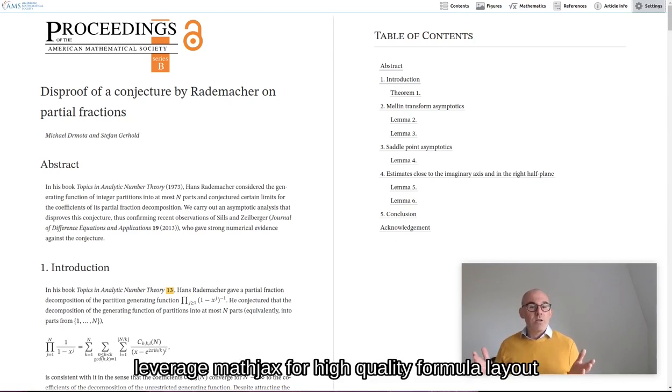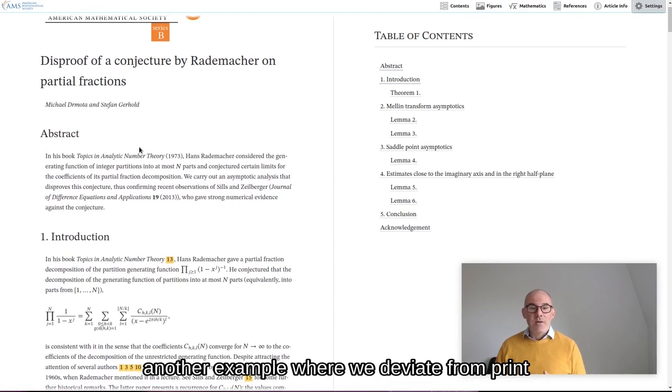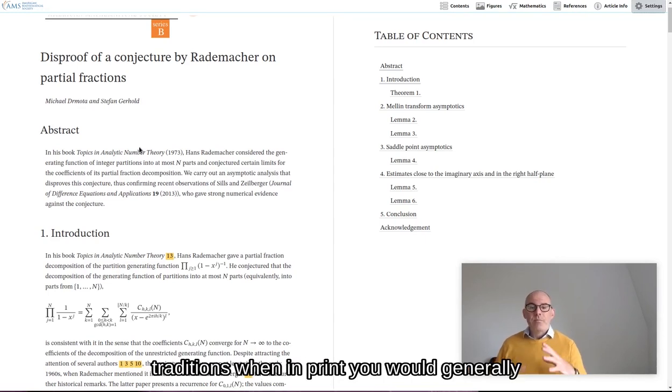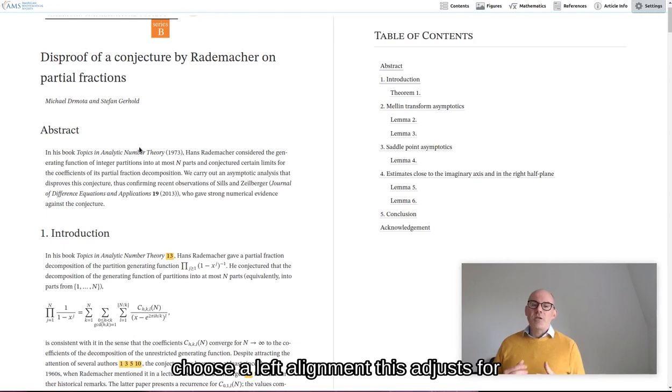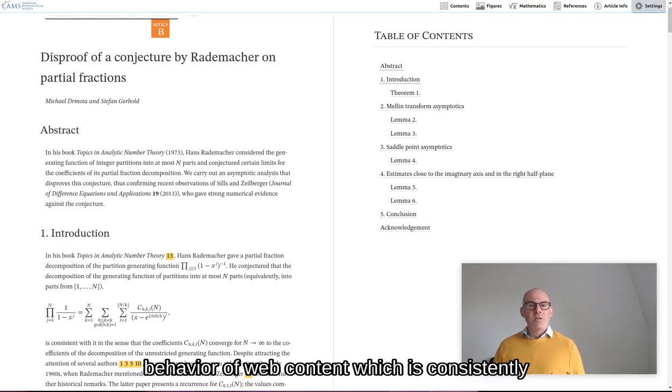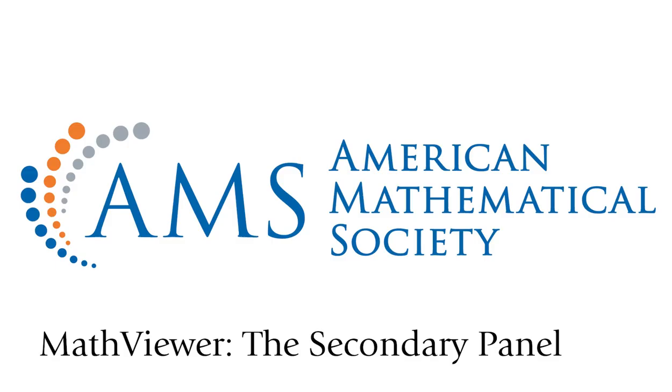Last, but very much not least, we leverage MathJax for high-quality formula layout on the web. MathJax continues to be the gold standard for this, and again, it is a project that the AMS has been a leading partner of ever since its inception. We'll get into more detail on formula layout later, but here we can identify another example where we deviate from print traditions. When in print, you would generally center display equations, on the web we choose a left alignment. This adjusts for the reading behavior of web content, which is consistently different from print. After all, we need to adapt to the way people read on the web, and not the other way around.